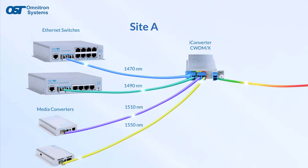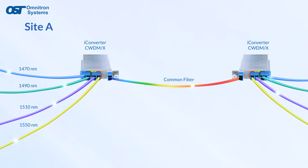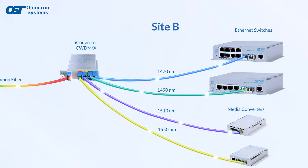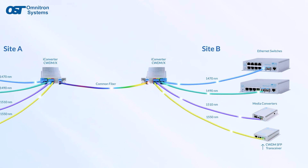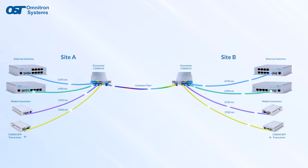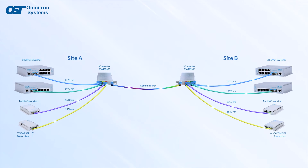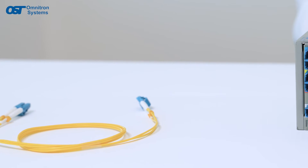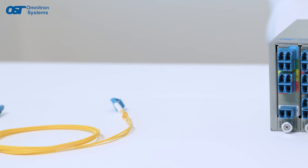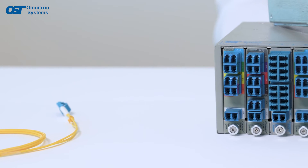Once everything is connected, the multiplexer does the rest. Each wavelength is sent through the fiber and received at the other end with another multiplexer or demultiplexer, which receives the data and directs it to its intended destination with shorter fiber patch cables. And that's it — once you've installed the CWDM multiplexer, you'll have a super efficient way to transmit data between all of your devices over one fiber cable.